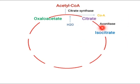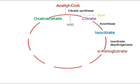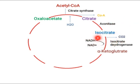Cis-aconitate converts into isocitrate, again with the help of aconitase enzyme. This isocitrate is a 6-carbon containing compound. Isocitrate then converts into alpha-ketoglutarate. The enzyme involved is isocitrate dehydrogenase enzyme, which removes hydrogen from isocitrate, picked up by NAD⁺ to form NADH. Meanwhile, carbon dioxide is also removed, so isocitrate (6-carbon) converts into alpha-ketoglutarate (5-carbon).